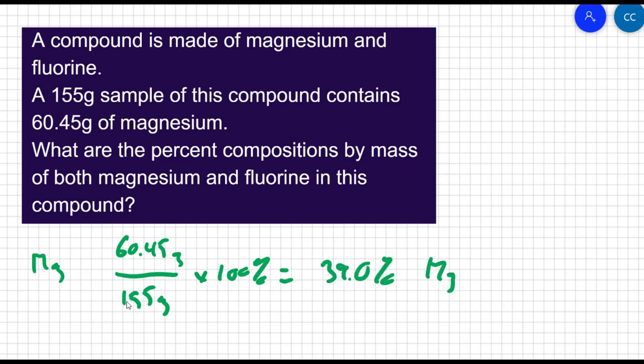We also want the percent composition of the fluorine. Well, the compound only has magnesium and fluorine. So if 39% of the compound is magnesium, the rest has to be fluorine. So this compound must be 61% fluorine, so that everything adds up to 100%.